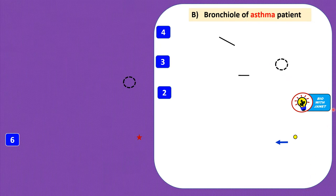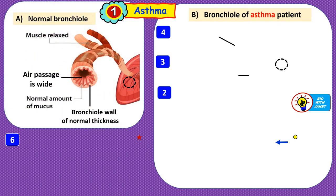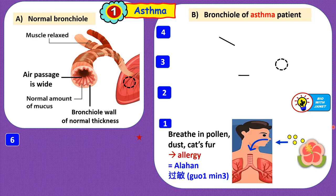The first COPD disease is asthma. In a healthy person, the bronchial wall is of normal thickness and not swollen. The air passage is wide with a normal amount of mucus, and the muscles surrounding the bronchial wall are relaxed and not contracted. In an asthma patient, when an attack occurs, the patient may breathe in something they are sensitive to, having an allergy or being hypersensitive to certain substances in the air.